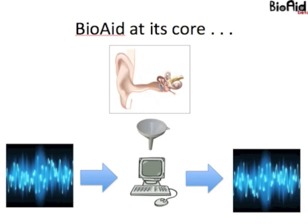In a nutshell, BioAid at its core is a model of the auditory periphery. The auditory periphery includes an outer ear, an ear canal, and some middle ear processing. The really interesting stuff happens when we get into the cochlea, which takes mechanical vibrations and converts them into spiking information that is sent up the auditory nerve to the brain. We can condense this processing into a computer simulation that takes an acoustic waveform as input, transforms it through a number of processes, and gives an acoustic waveform at the output that we can present to the listener, either processed offline or in real time.